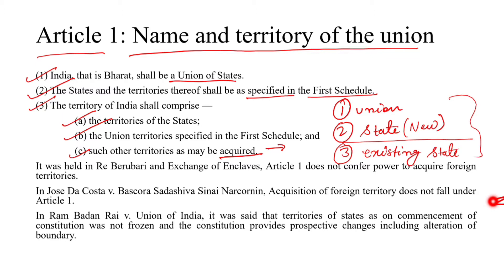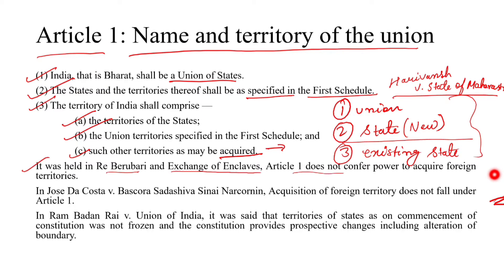This was held in Harivans v. State of Maharashtra. It was also held in the Beruberi Exchange Enclaves case that Article 1 does not confer power to acquire foreign territory. Article 1 does not give any power to acquire foreign territories, meaning the executive cannot capture any territory. All acquisition of foreign territory does not fall under Article 1.